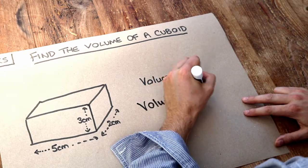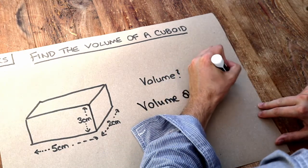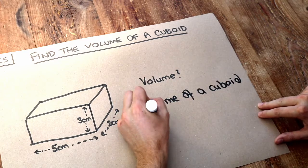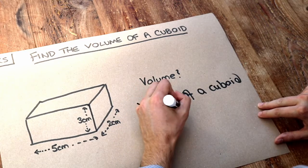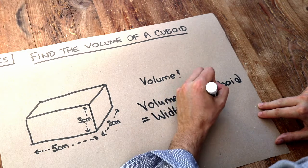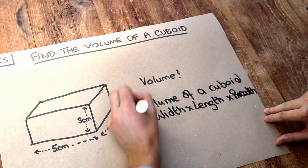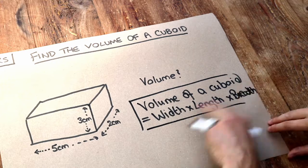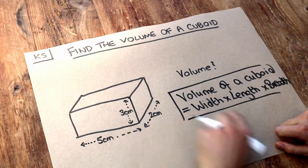Now the volume of a cuboid has a very simple formula. It's just equal to the width times the length times the breadth. And in short all you need to do is just multiply the three lengths you see.